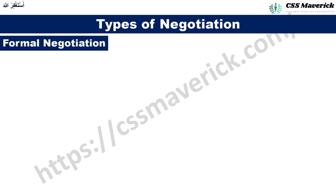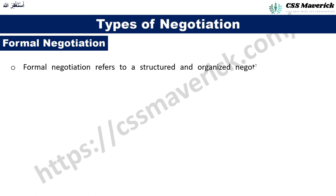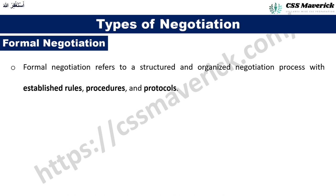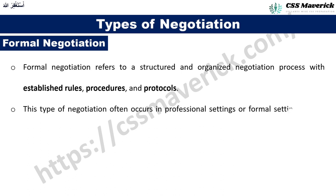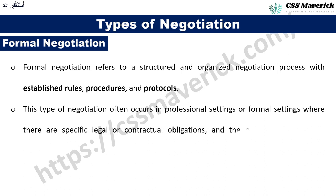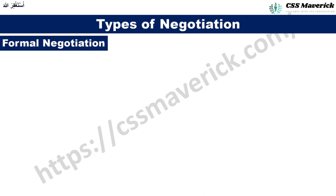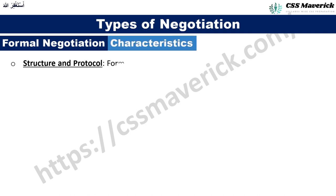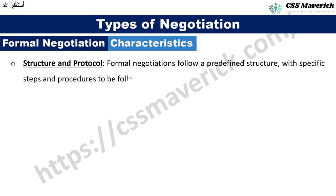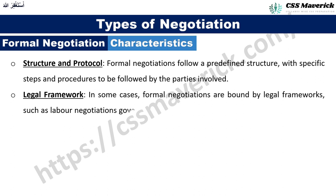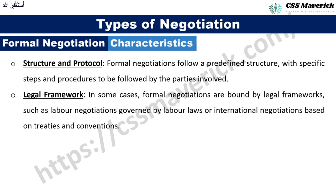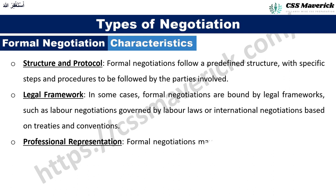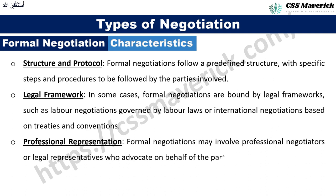Formal negotiation refers to a structured and organized negotiation process with established rules, procedures, and protocols, often occurring in professional settings with specific legal or contractual obligations. Its characteristics include: structure and protocol — following predefined steps and procedures; a legal framework — such as labor laws or international treaties and conventions; and professional representation — involving professional negotiators or legal representatives who advocate on behalf of the parties.